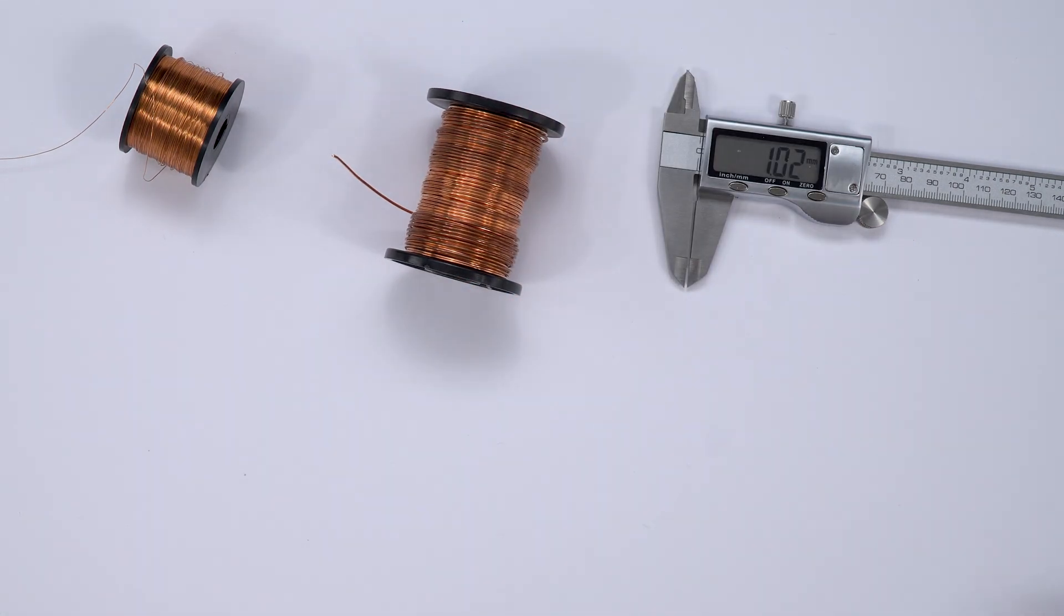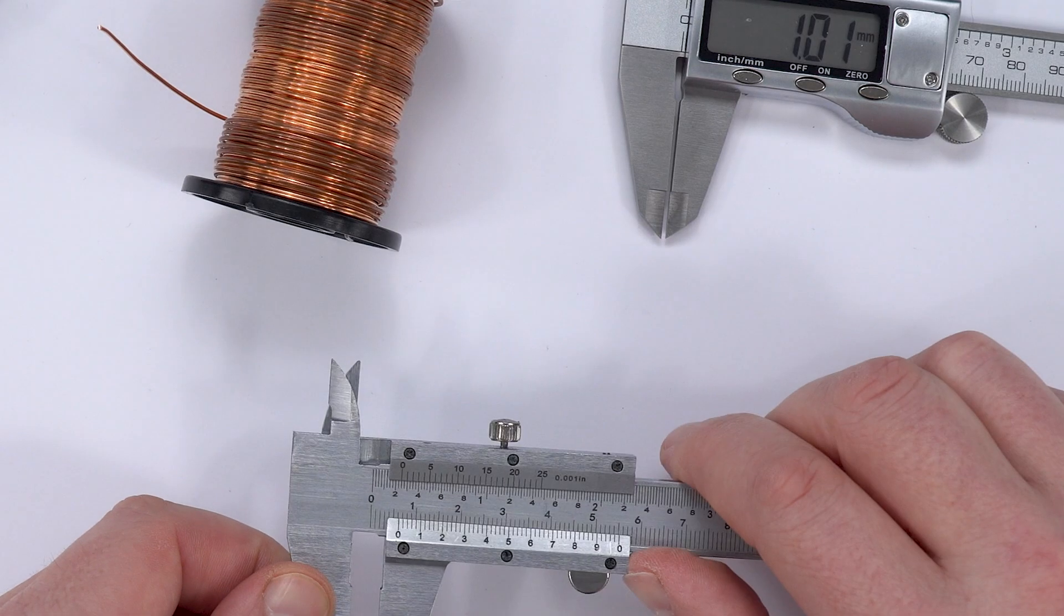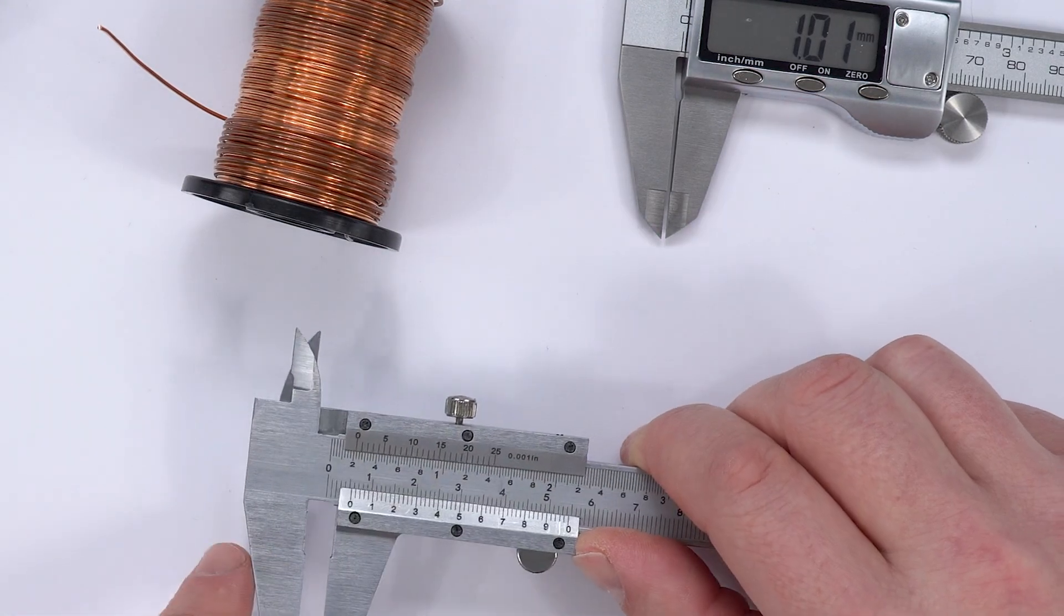Depending on the equipment you have, you might have a vernier caliper like this, which is a bit more tricky to read than the digital one.